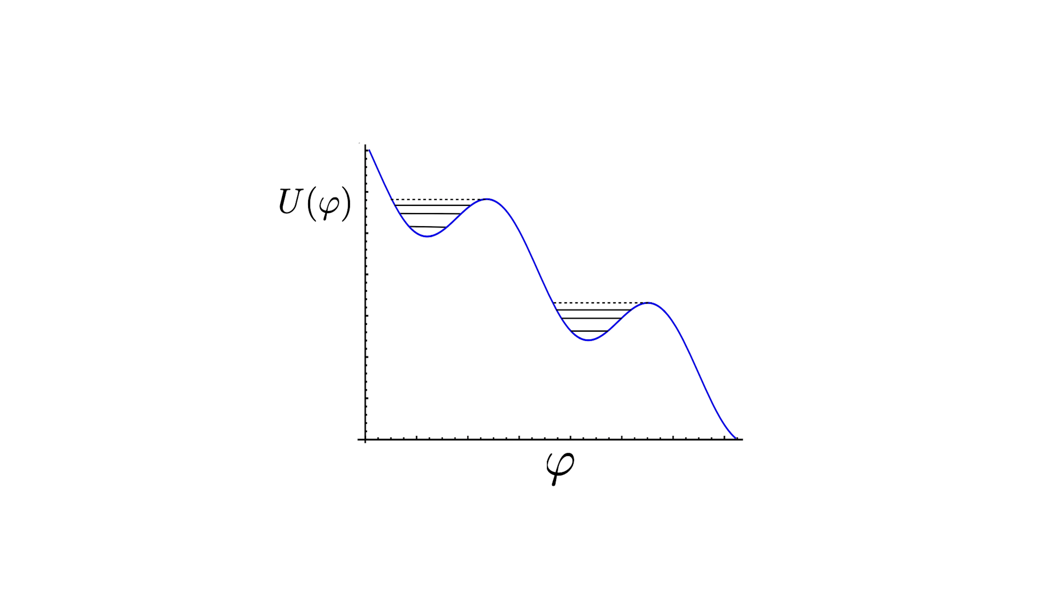And if this isn't astonishing enough, get this. In some regimes, like current below the critical and very low temperature, inside the well of that washboard potential, there are quantized energy levels. That is, there are discrete states of the junction that don't have enough energy to escape.